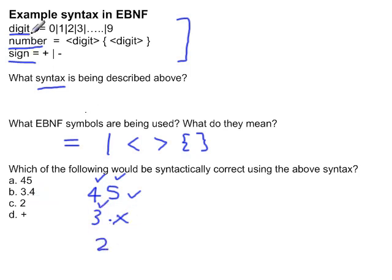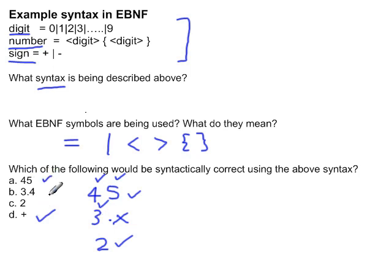Then we have 2, and 2 is either a digit or a number, so that is syntactically correct. Lastly we have the plus sign, which is actually a sign, so that is also correct. Out of those four, three are syntactically correct and 3.4 would give a syntax error.